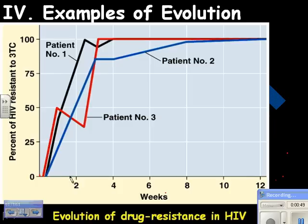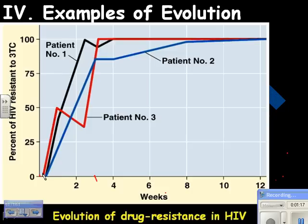Give it two to two and a half weeks, and the percentage of HIV resistant to 3TC is up to about 100%. What happened is you killed off 99.99% of the HIV. The 0.01% that's left is resistant — it had some spontaneous mutation before the drug was introduced. The drug was introduced, and that one was able to live.